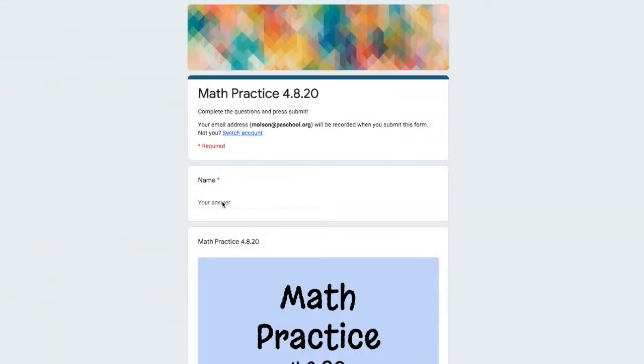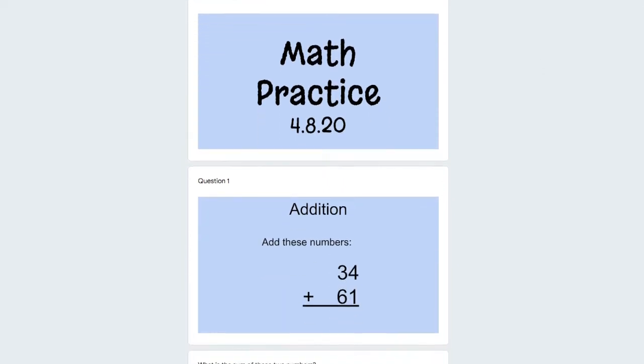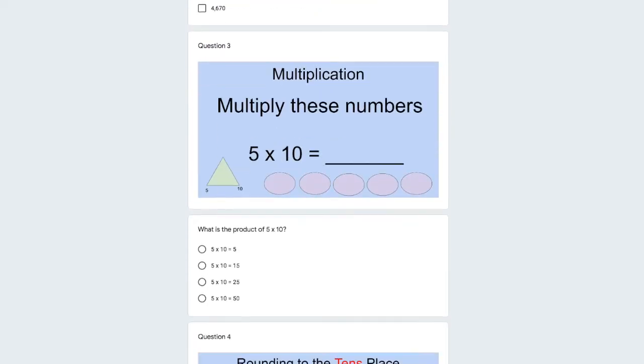The first thing you'll do is write in your name. By clicking on this box, you'll be able to type in your name so we know who's completing the assignment. Then you're going to scroll down, check to make sure that you're on the correct date, and if you keep scrolling down, you'll start to see the questions that you'll be answering for that day.